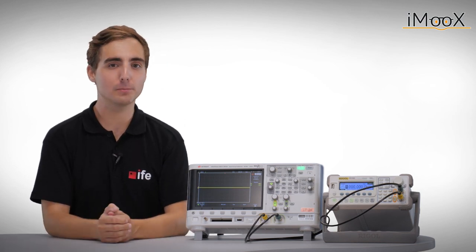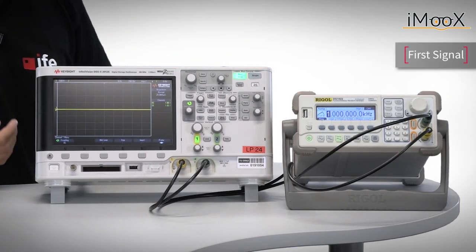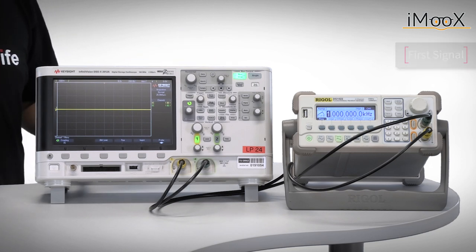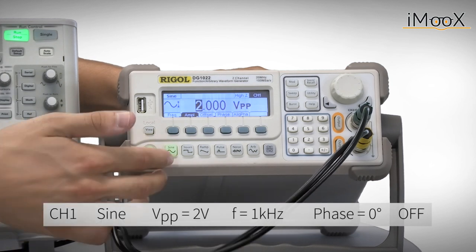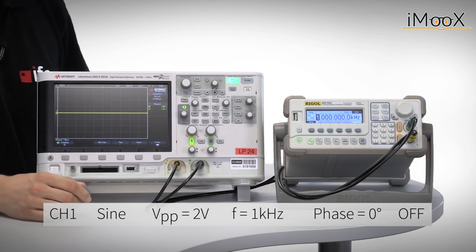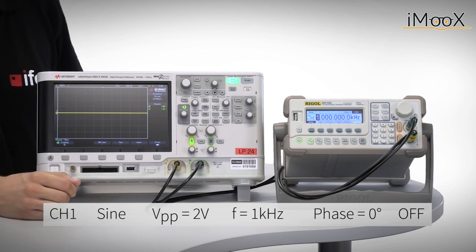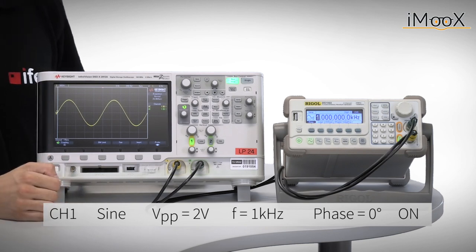Let us now continue by showing you a simple example. Our test setup only consists of a signal generator and the scope itself, and these are connected by simple coaxial cables. The signal generator is set to generate a sine signal with an amplitude of 2 volt peak-to-peak and a frequency of 1 kilohertz. In the beginning, we just see a straight line as the signal generator output is not activated yet. If we now enable the output of the signal generator, we see the expected sine wave.